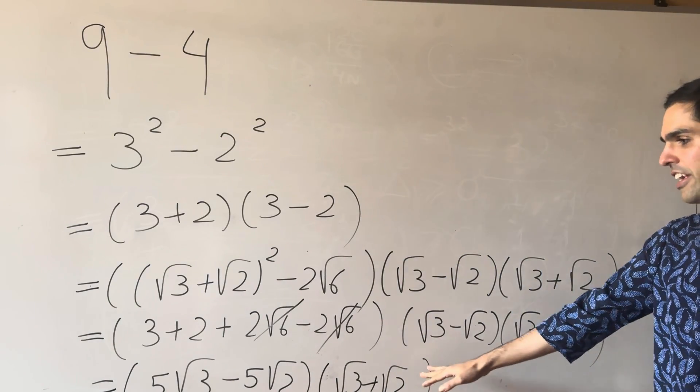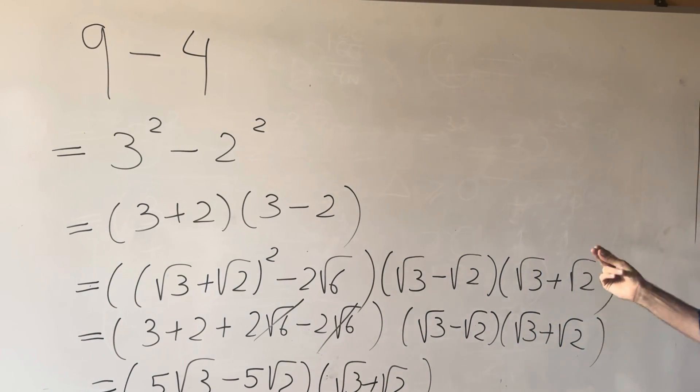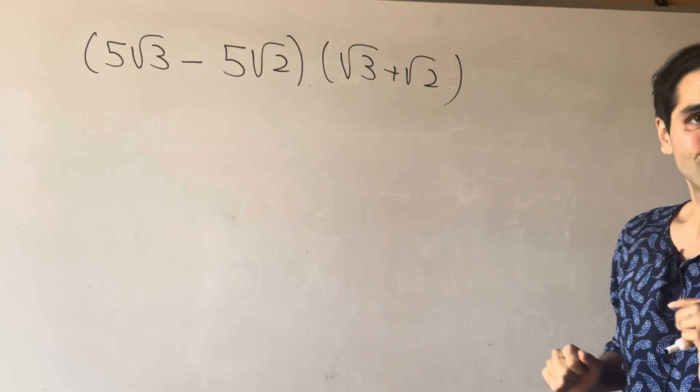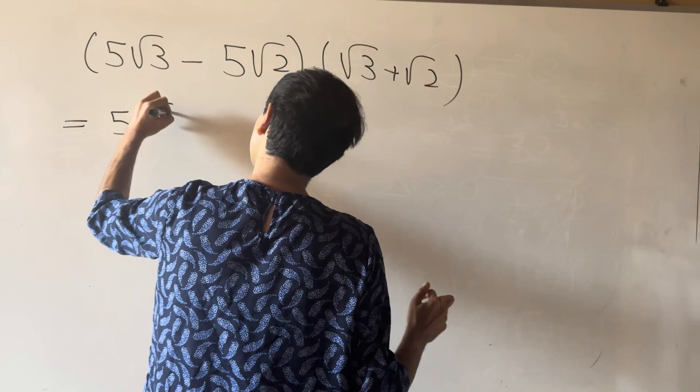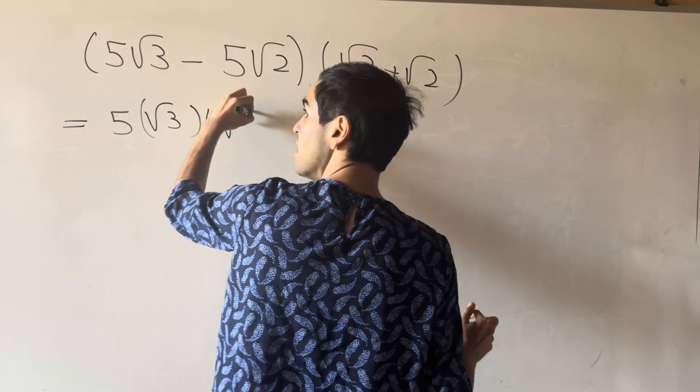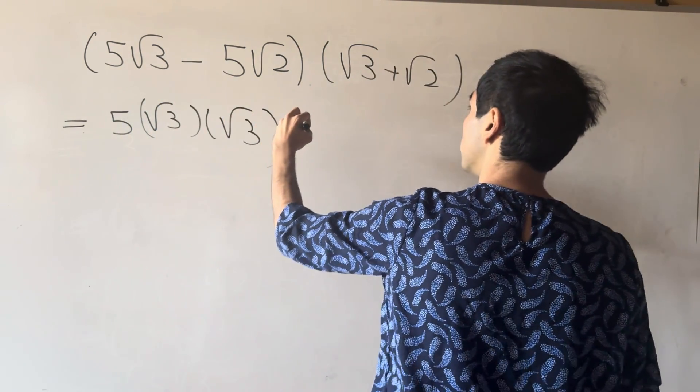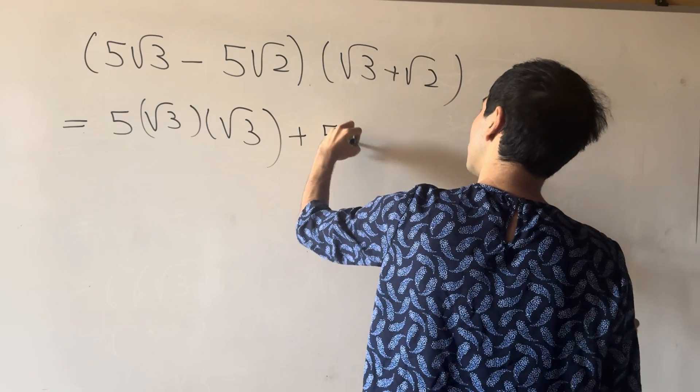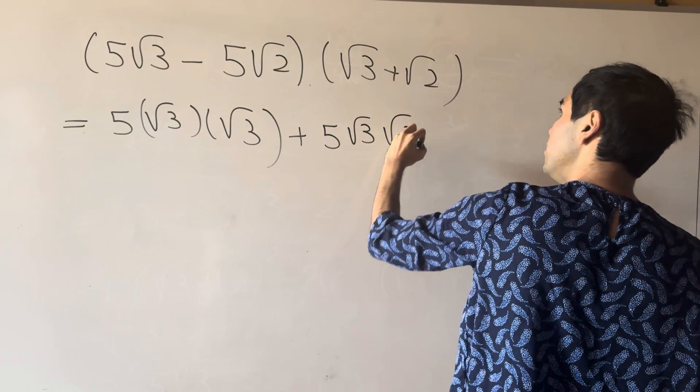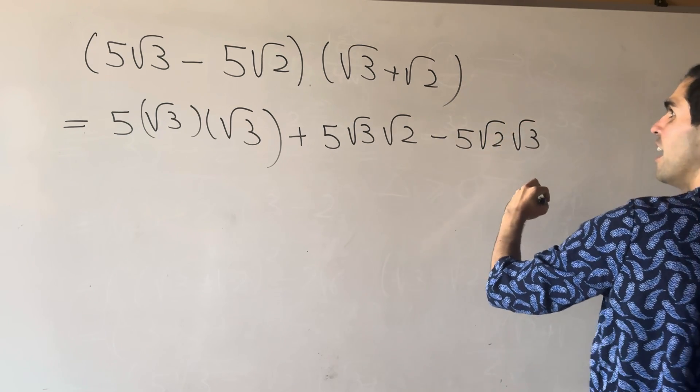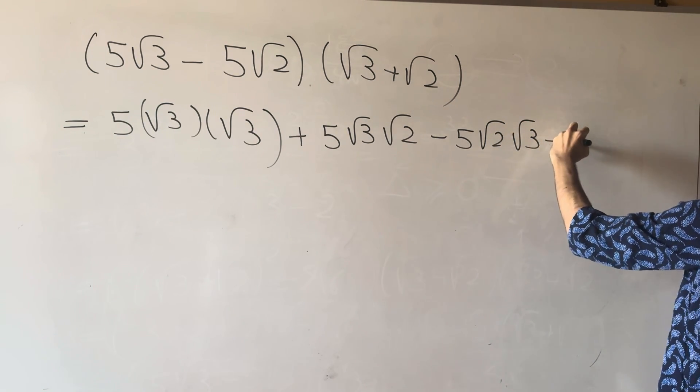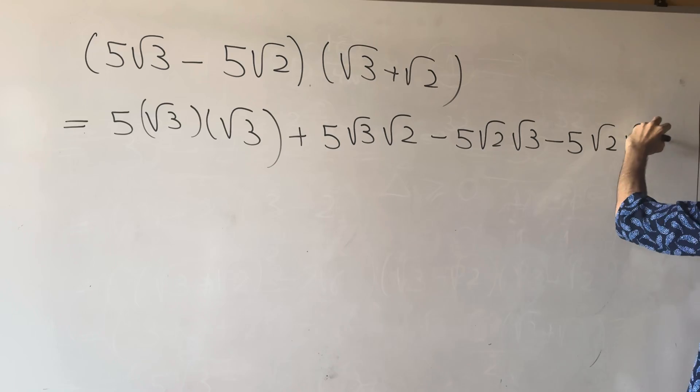And now the cool thing is we can expand this out. So now let's fold this out. So we get 5 square root of 3 times square root of 3 plus 5 square root of 3 times square root of 2 minus 5 square root of 2 square root of 3. And then minus 5 square root of 2 times square root of 2.